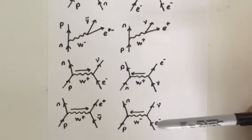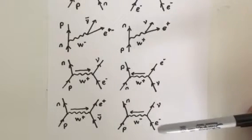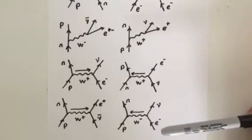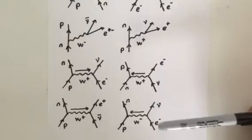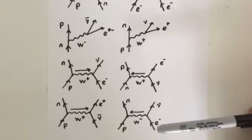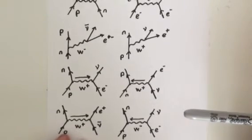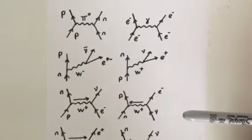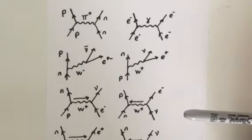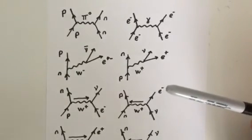If a particle is neutral and becomes positive, we can think of it either as gaining a positive W-plus boson, or losing a negative one. So there are eight very important Feynman diagrams for you to learn for A-level physics, and I hope to see you in the next video.